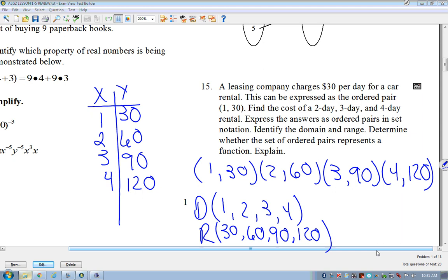Determine whether the set of ordered pairs represents a function. These are my inputs and my inputs are all different. So that's the first indicator that this is a function. One doesn't have more than one output. Two doesn't have more than one output. Three doesn't have more than one output. And neither does four. So we would say, yes, this is a function because there's only one output per input. Is that, I know I went through that really quick, Jewel. Did that make sense? Okay.